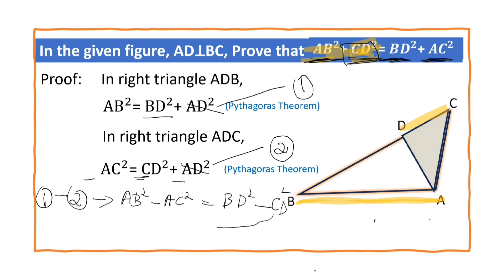So, now let us transpose CD² to this side and AC² to this side. Now, it becomes AB² + CD² = BD² + AC².